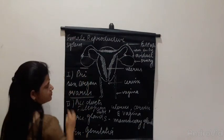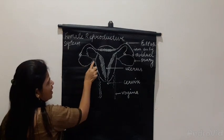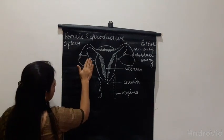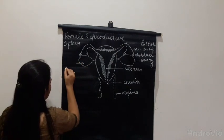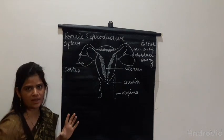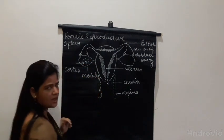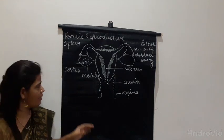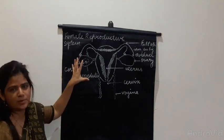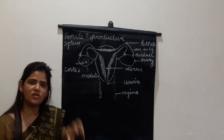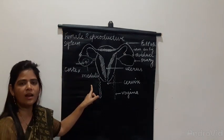Now let us look at the ovary structure. The ovary has a very thin epithelium on the outside. It has two parts: the peripheral part is called the cortex — the ovarian cortex — and the inner part is called the medulla. So the ovary is covered by a thin epithelium, with a peripheral cortex and a central medulla. Whenever we use the term medulla, it refers to the structure present in the center.